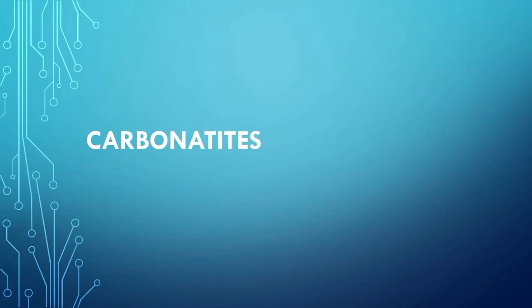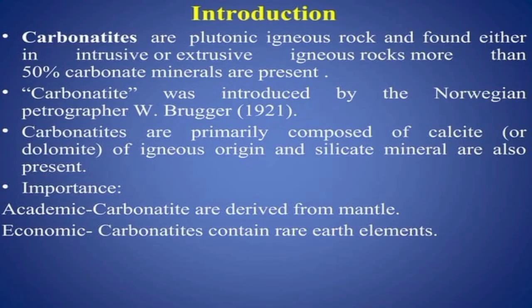Today we are going to discuss carbonatites, which is a type of igneous rock. Carbonatites are plutonic igneous rocks — plutonic means rocks which are mostly formed in the interior of the Earth's crust rather than at or just below the surface.